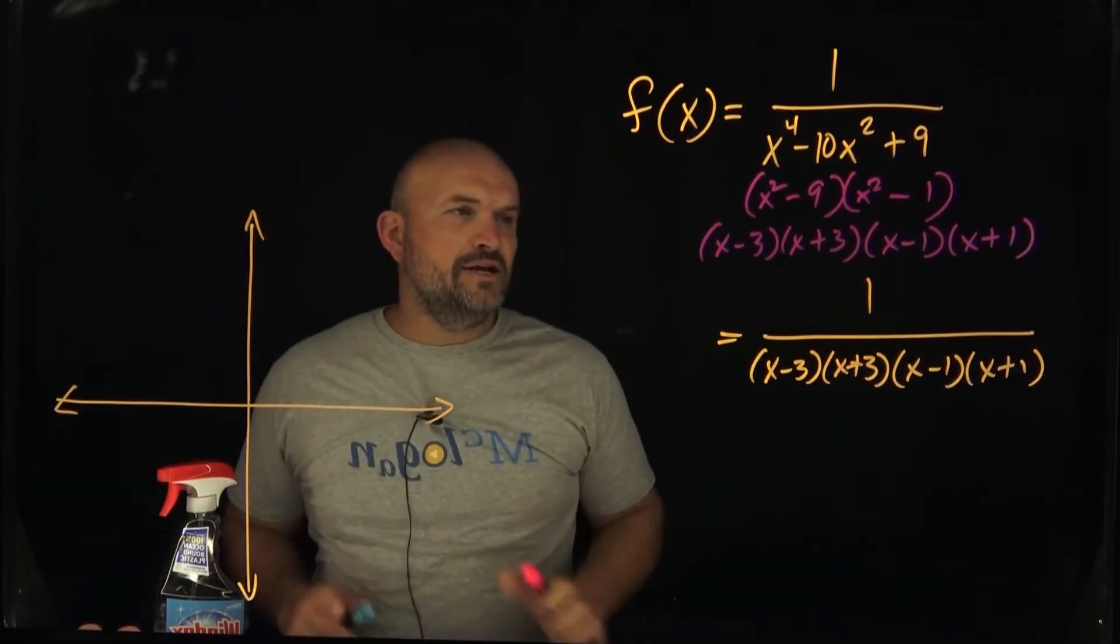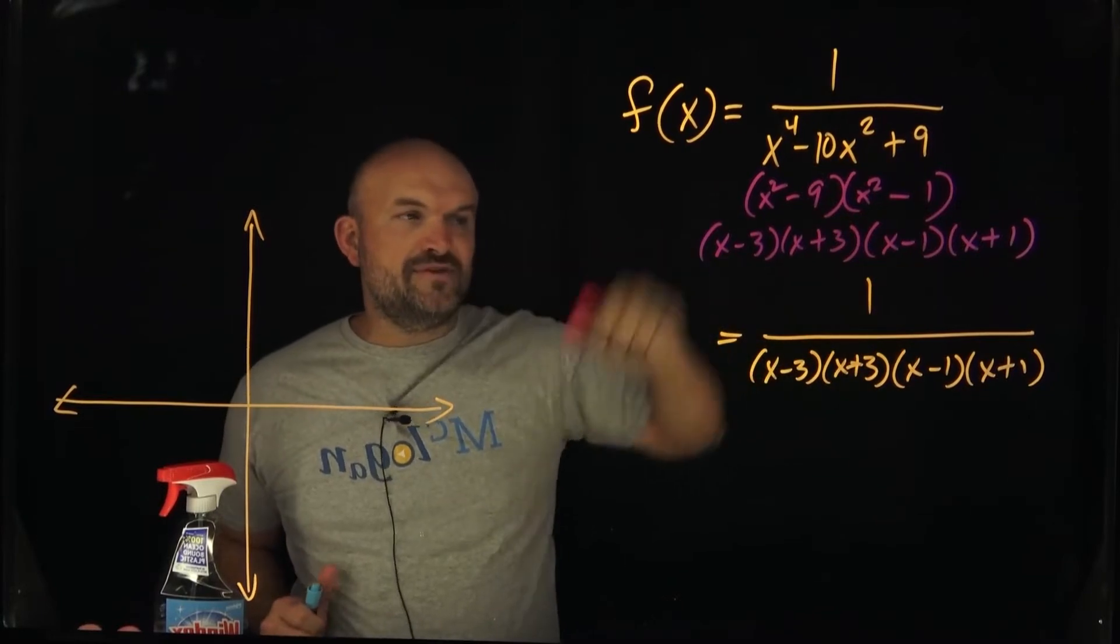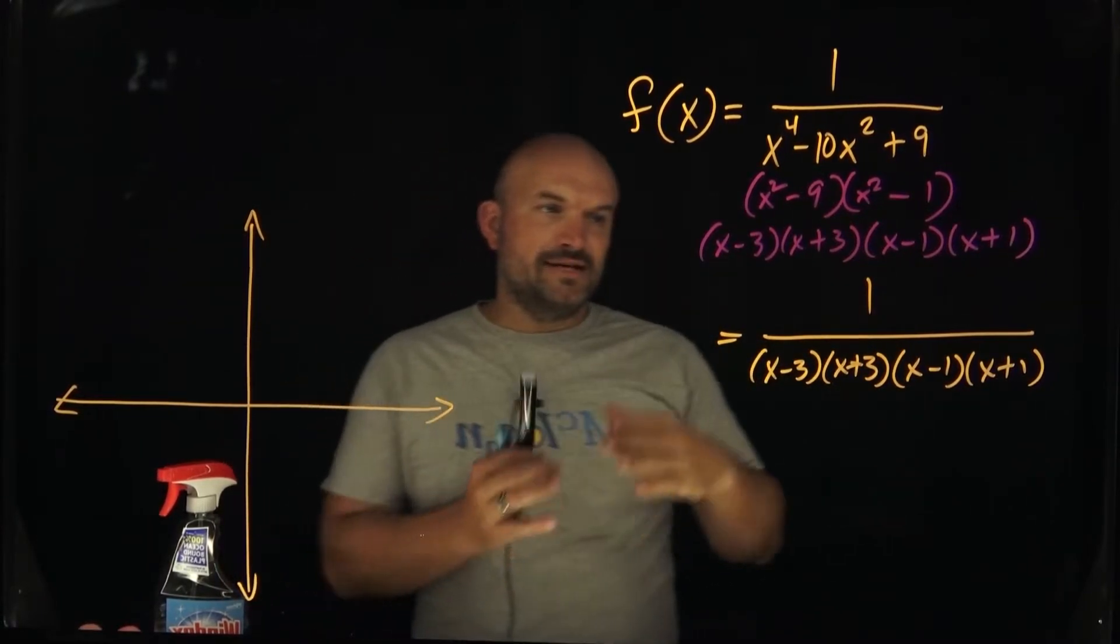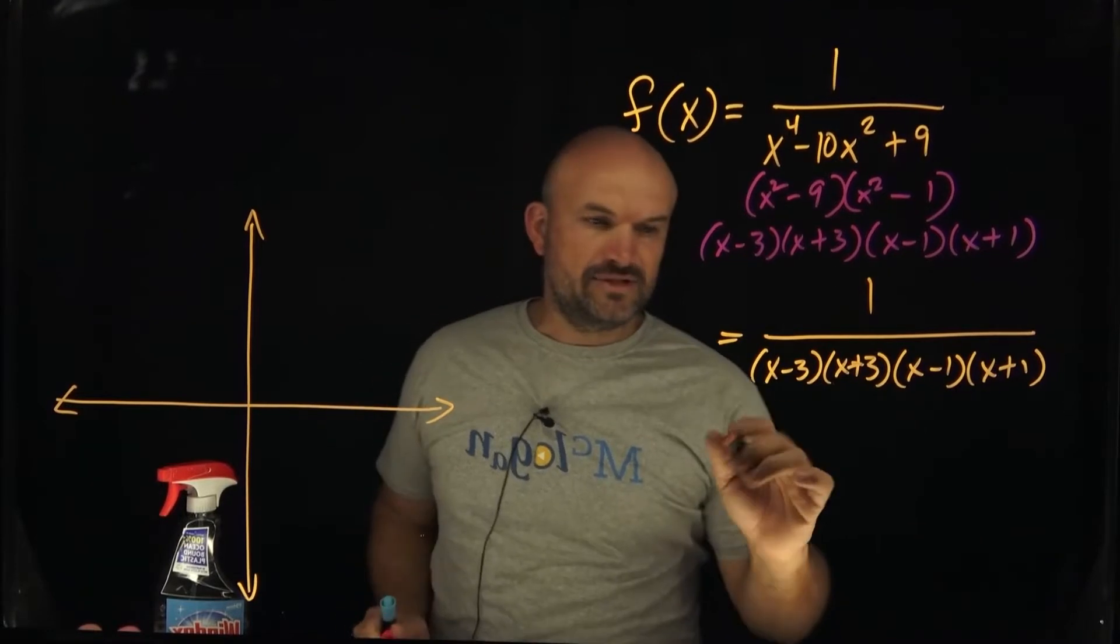The first thing I always like to do is, we already simplified it, right? So let's go and find our vertical asymptotes. And vertical asymptotes are pretty easy. You just take your denominator and set it equal to zero.